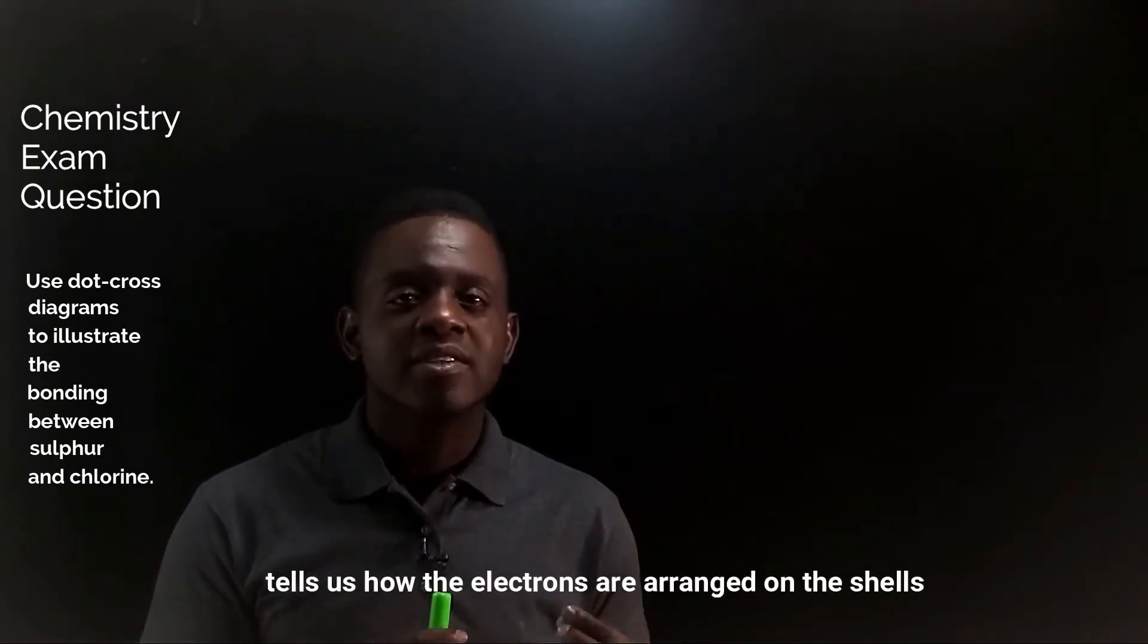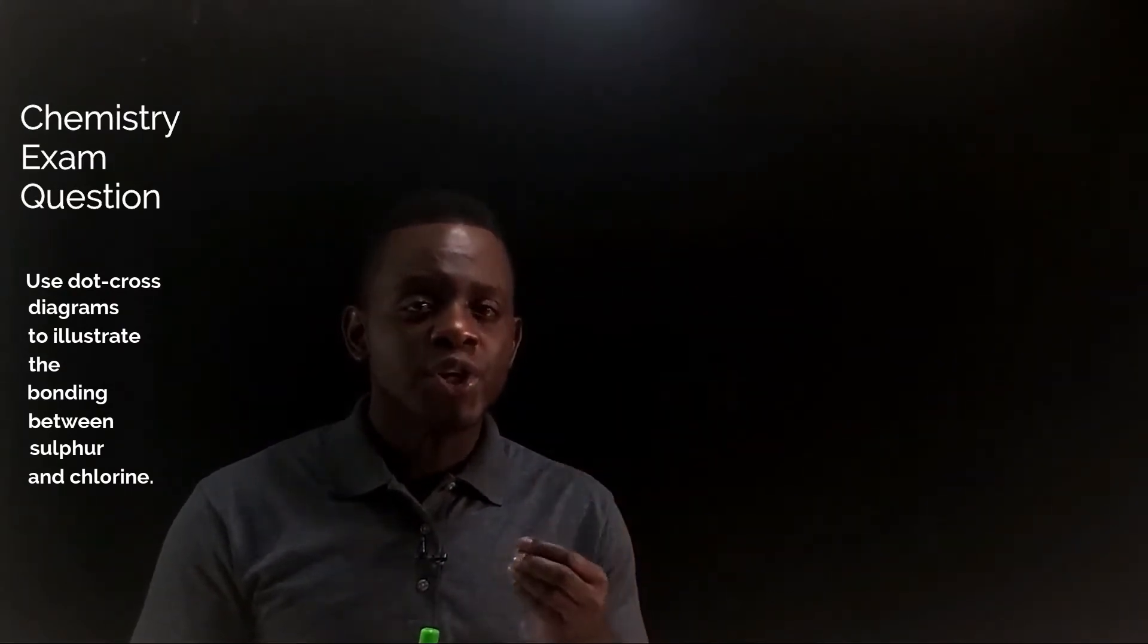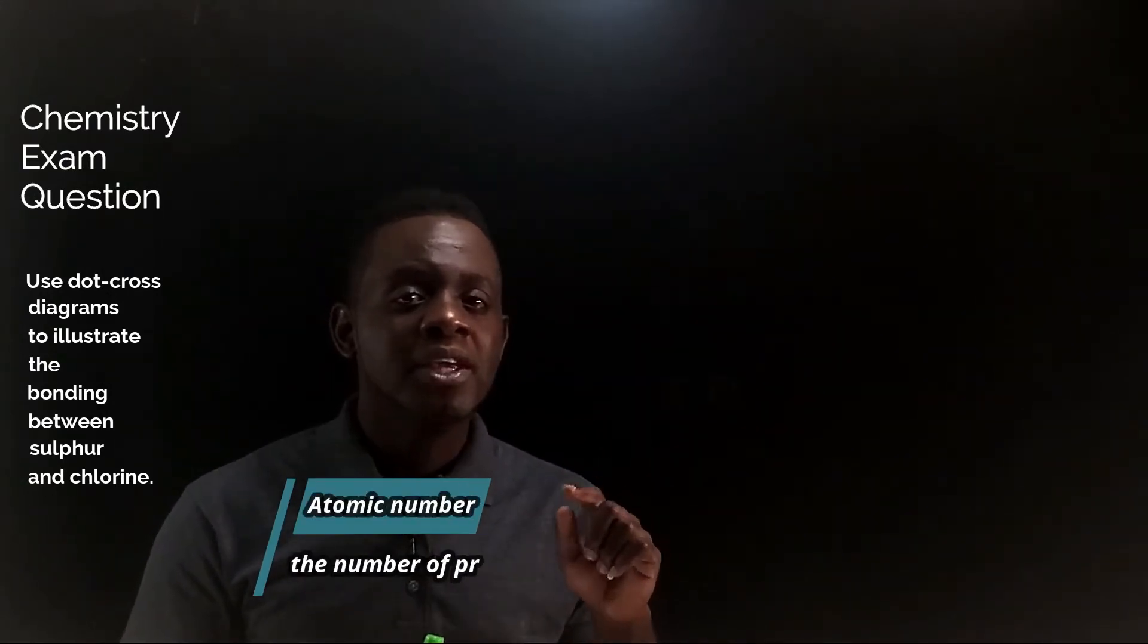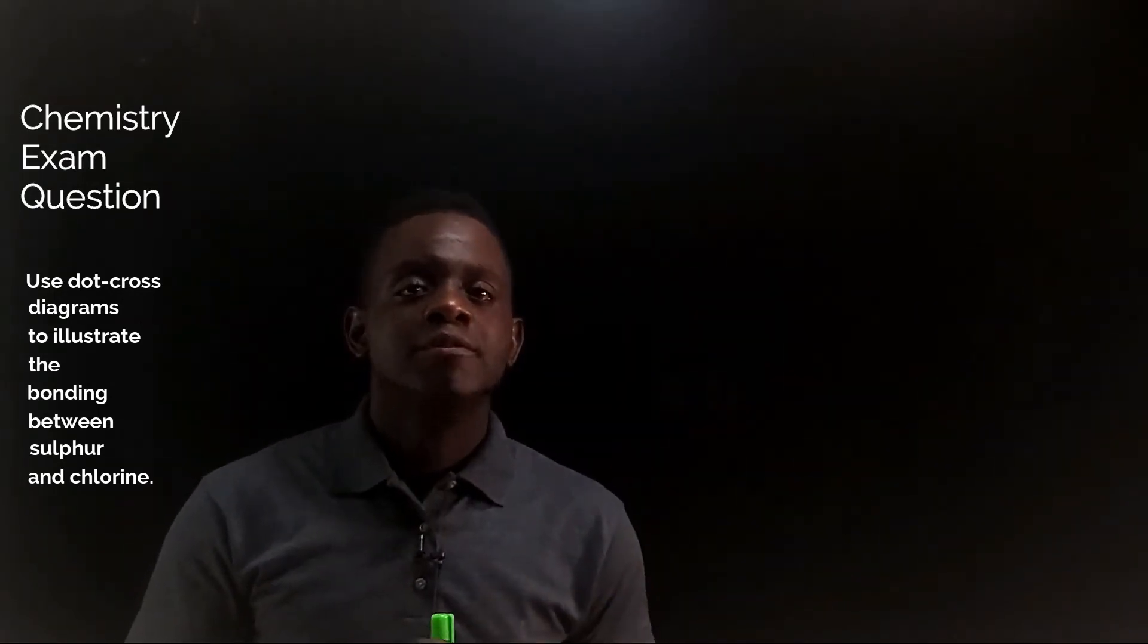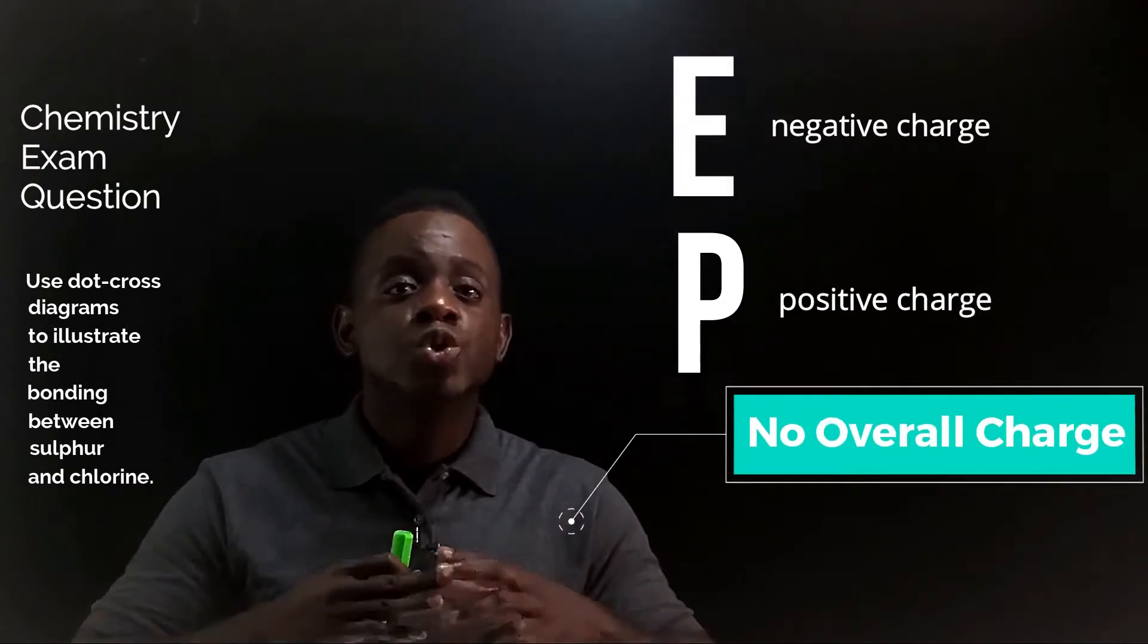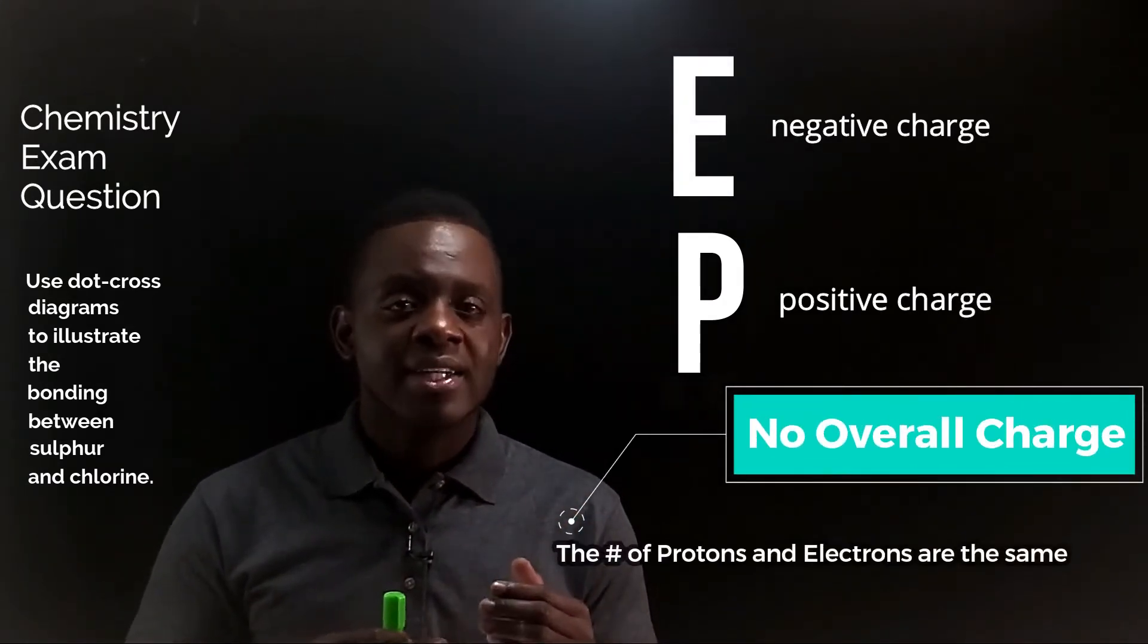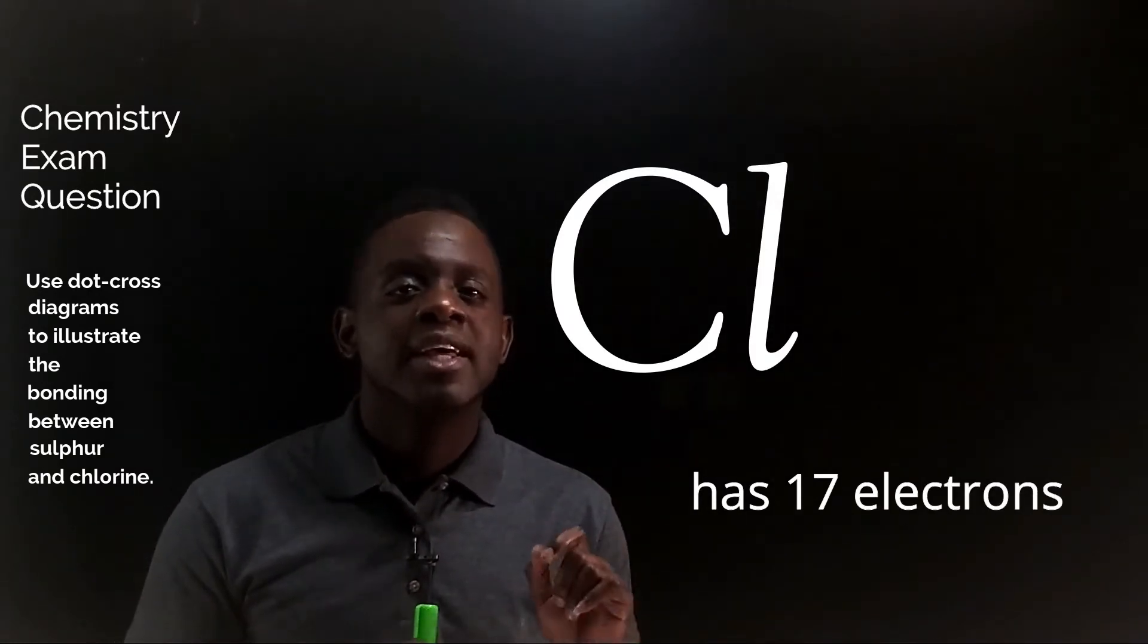The atomic number is important because it tells us how the electrons are arranged on the shells and we are concerned with the electrons in chemical bonding. The atomic number gives us that information because atomic number equals the number of protons in the nucleus of an atom. But if protons are positively charged and an atom has no overall charge, it follows that the number of protons and electrons are the same. So sulfur has 16 electrons and chlorine has 17 electrons.